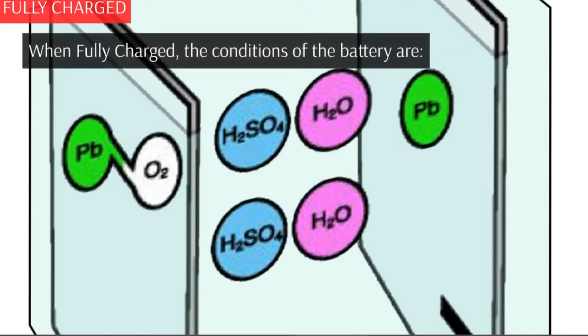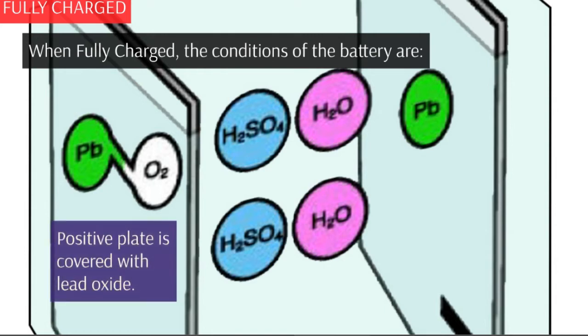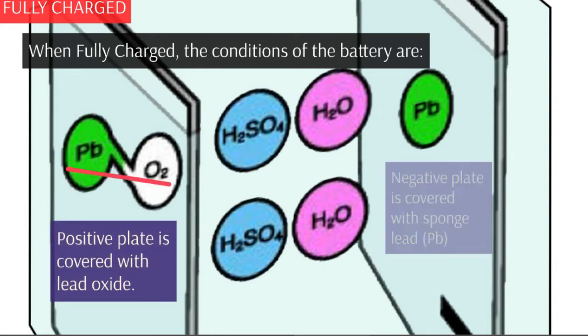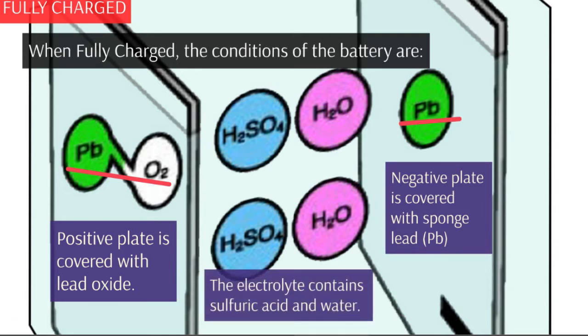When fully charged, the conditions of the battery are: the positive plate is covered with lead oxide, the negative plate is covered with sponge lead, and the electrolyte contains sulfuric acid in water.